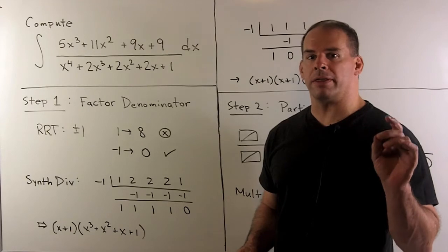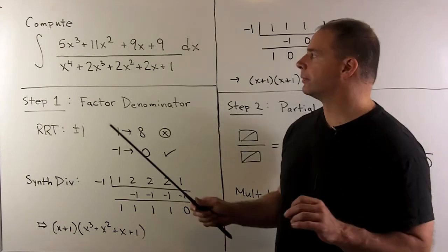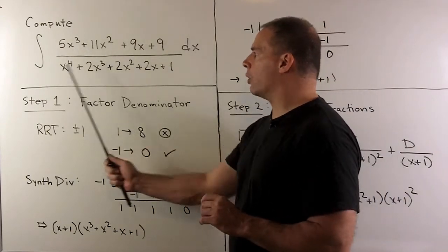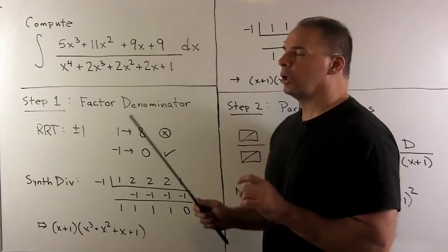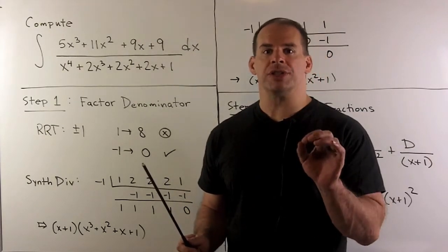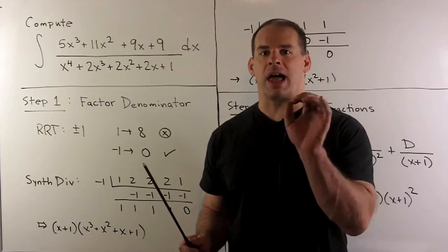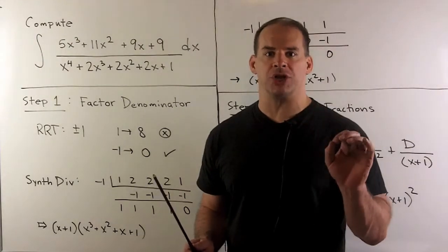Compute the indefinite integral of the following rational function. I have a cubic over a quartic. We'll apply partial fractions, and we'll see that our final answer has a logarithm and an inverse tangent.